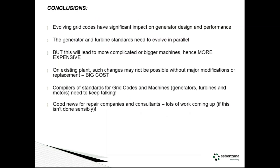In conclusion: changing the grid codes is going to have significant impact on generator design and performance. Generator and turbine standards have to evolve in parallel, but if you do this, you end up with more complicated and more expensive machines. Existing plant — it's not so easy. This is a real concern for guys with embedded generation. There are a lot of machines out there owned by the SEPIs, the Lobos, Sassols, who aren't Eskom machines — they've all got to comply. Some of these machines have been running for 30 to 40 years; now suddenly they have to meet these new requirements and they just can't. If you're a sugar mill, do you want to spend 40 or 50 million on a new generator just to meet the new grid code requirements? This must be part of the discussion.